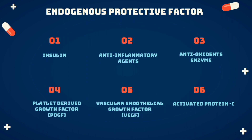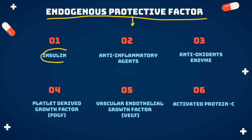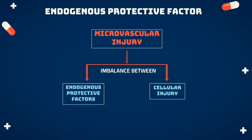There are also endogenous protective factors which can reverse or prevent the development of microvascular complications. These include insulin, which regulates blood glucose levels, as well as anti-inflammatory agents and antioxidant enzymes. Platelet-derived growth factors, vascular endothelial growth factors, and activated protein kinase C are other factors that provide protection against microvascular complications. Whenever microvascular injury occurs, it means there is always an imbalance between these endogenous protective factors and cellular injury.